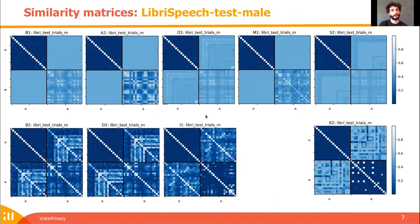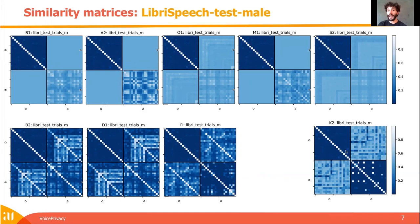Here are the results for the systems. We can see that some systems perform similarly to baseline one, where we have good de-identification as the diagonal disappears from MOO to MOP, but poor voice distinctiveness preservation because the diagonal tends to disappear also from MOO to MPP. Some systems perform similarly to baseline two, where there is still voice distinctiveness in the protected space as there is still a bit of diagonal in MPP. However, there is poor de-identification. System K2 seems to perform well on both de-identification and voice distinctiveness preservation, though there are some sparse confusions between pseudo voices for some speakers.